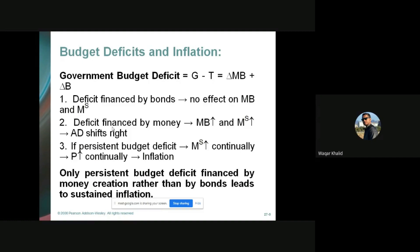Methods of financing government spending are described by an expression called the government budget constraint. This equation states that the government budget deficit — the excess of government spending (G) over tax revenue (T) — equals the sum of the change in the monetary base (ΔM) and the change in government bonds held by the public (ΔB).